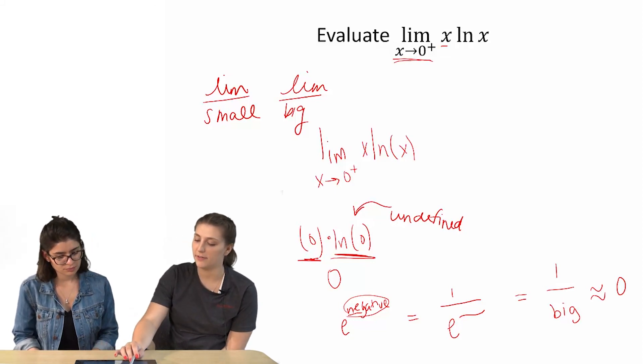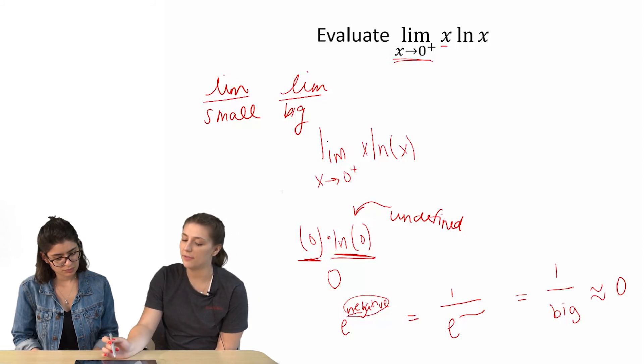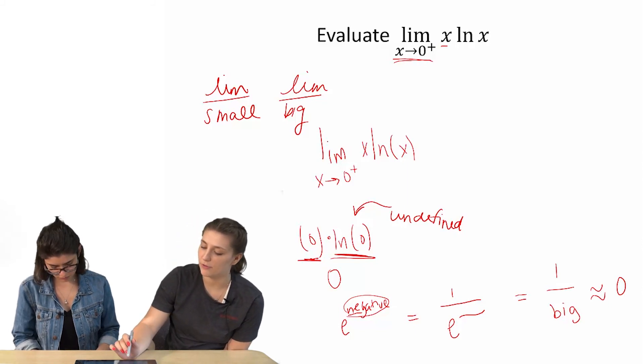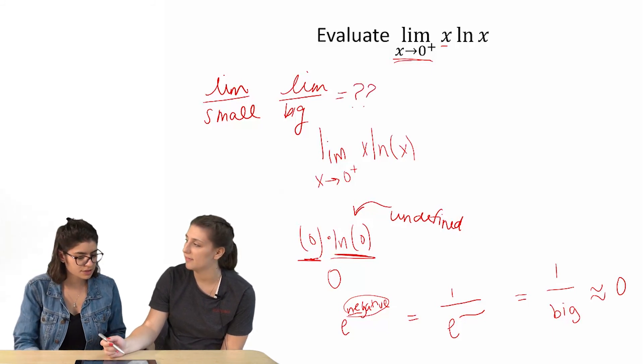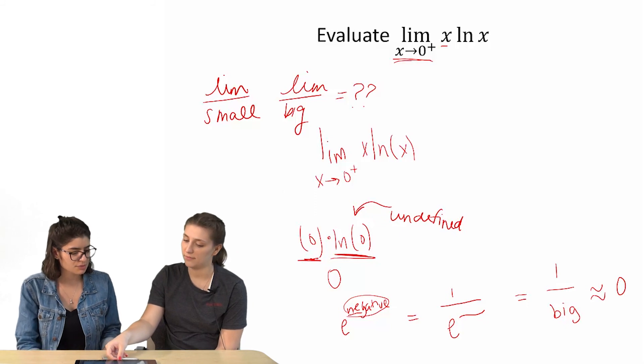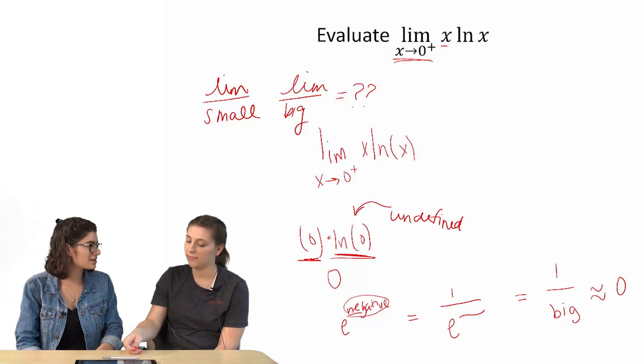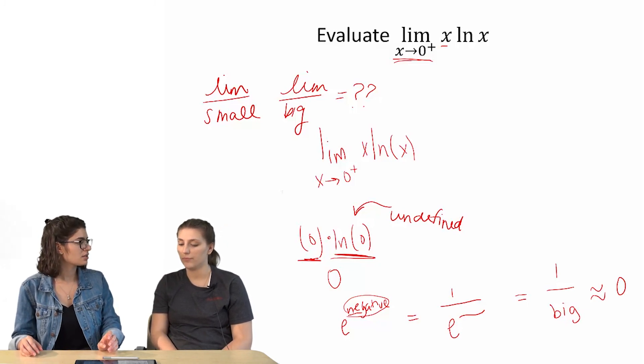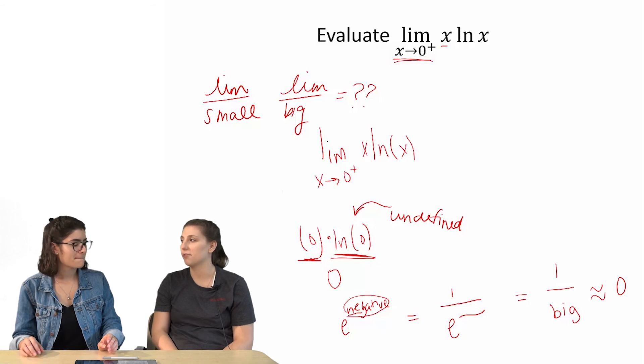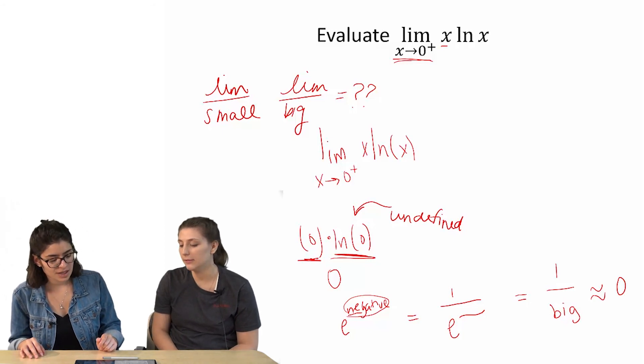Okay. So then the limit of natural log of x as it approaches zero would be really big. So I don't really know how these balance out. Well, I guess it depends on how small the small is and how big the big is, because whichever one is more extreme will probably pull the other in that direction. Yeah. How do we figure that out though? I'm not sure.